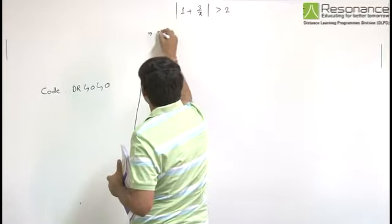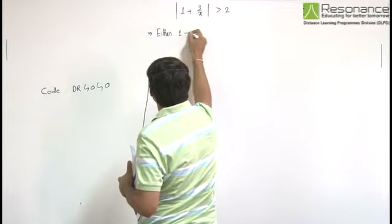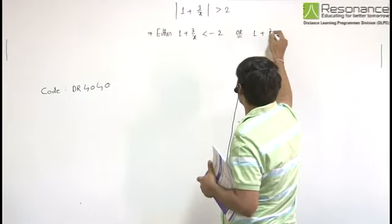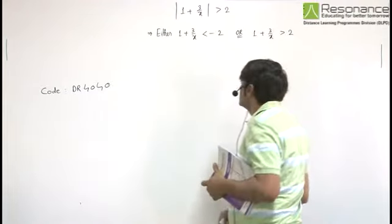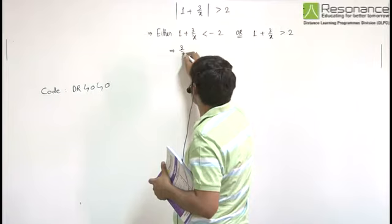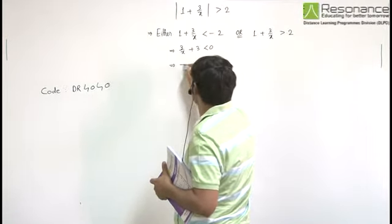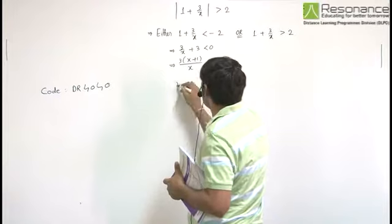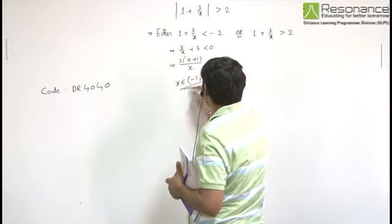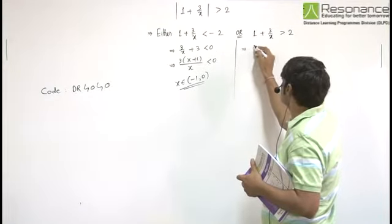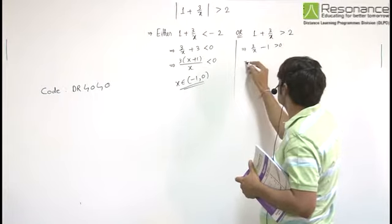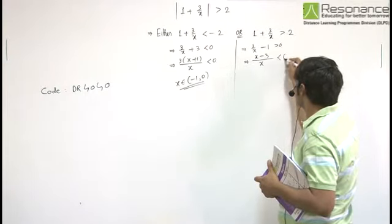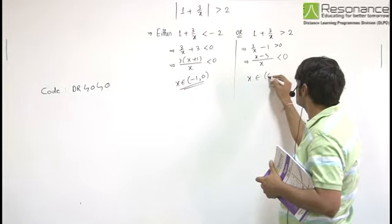So we can say that 1 plus 3 by x is greater than 2, and 1 plus 3 by x belongs to 0 to 3.